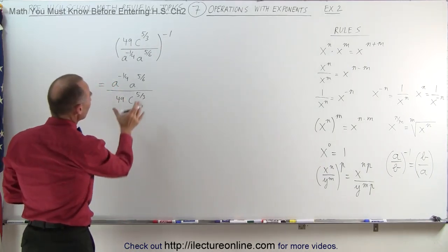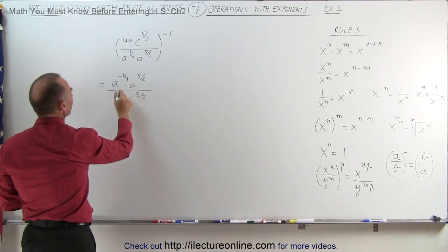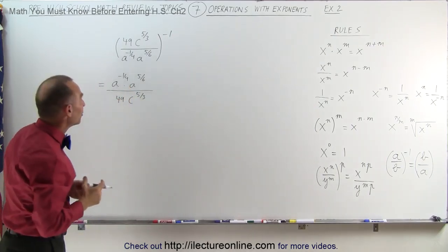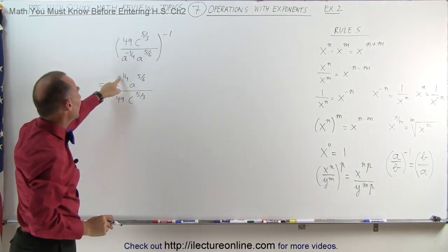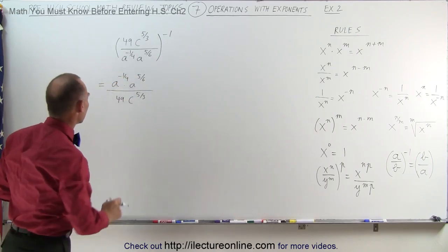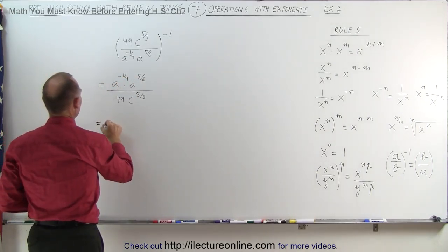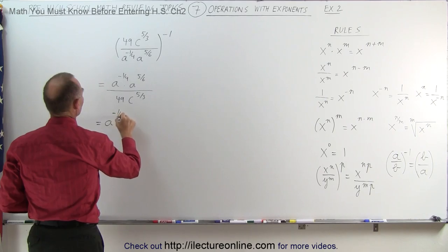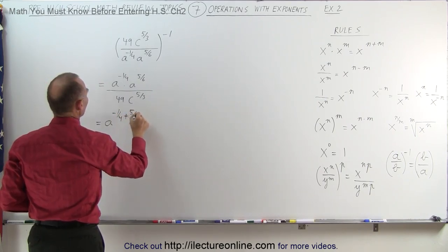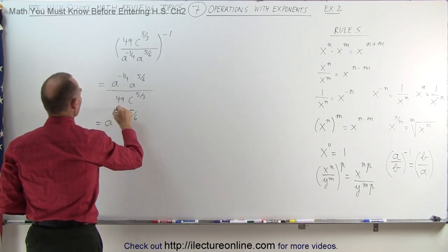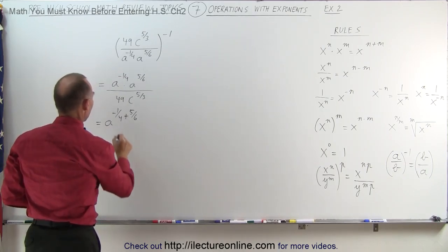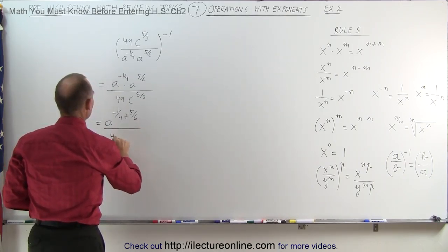Next I can combine what's in the numerator. Notice that we have the bases the same, so we can simply add the exponents. This becomes equal to a to the minus 1 fourth plus 5 over 6, divided by 49 c to the 5 thirds power.